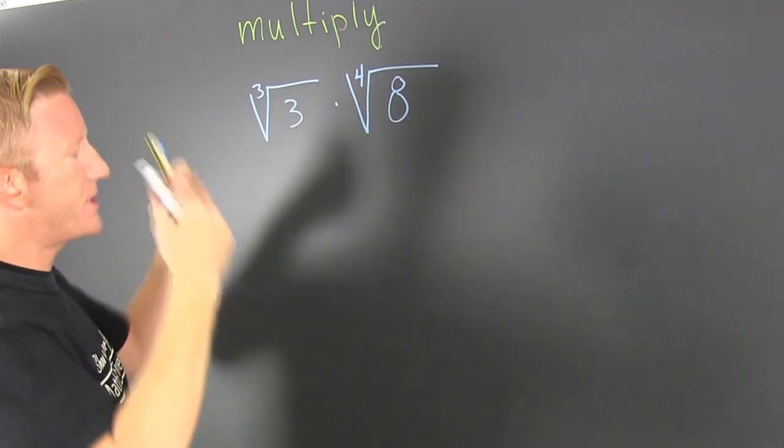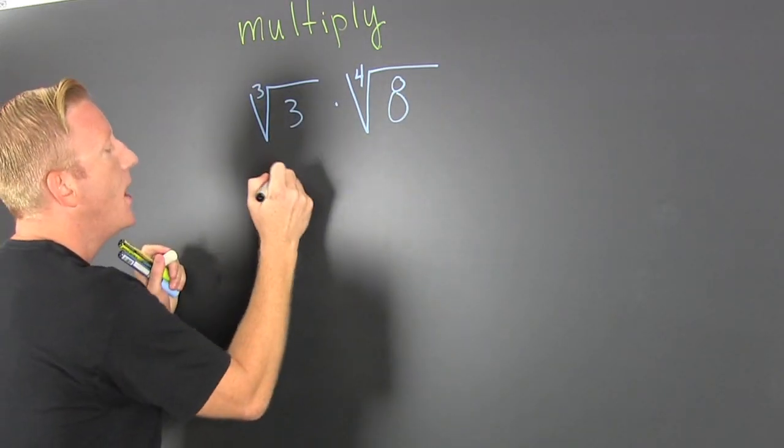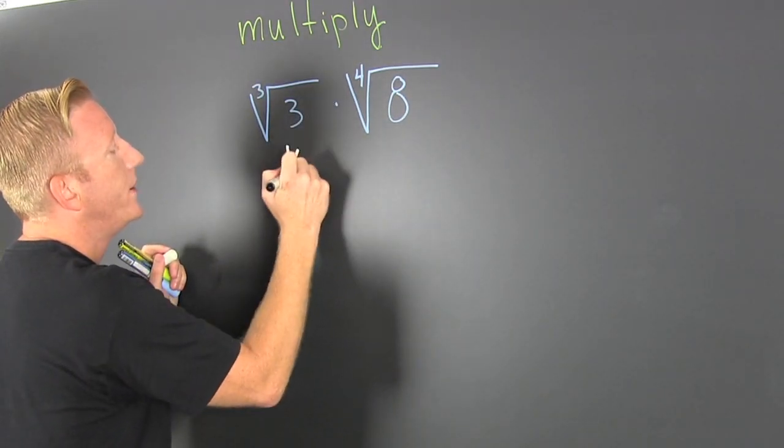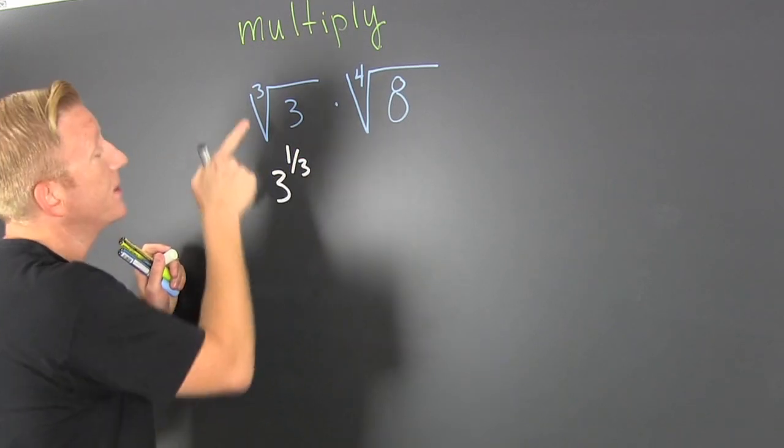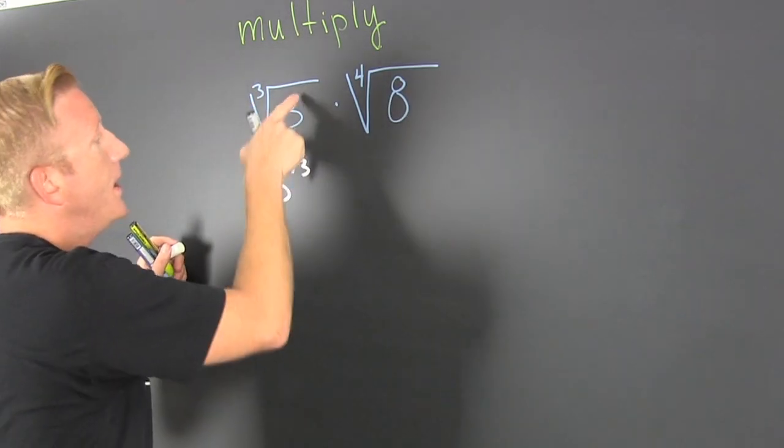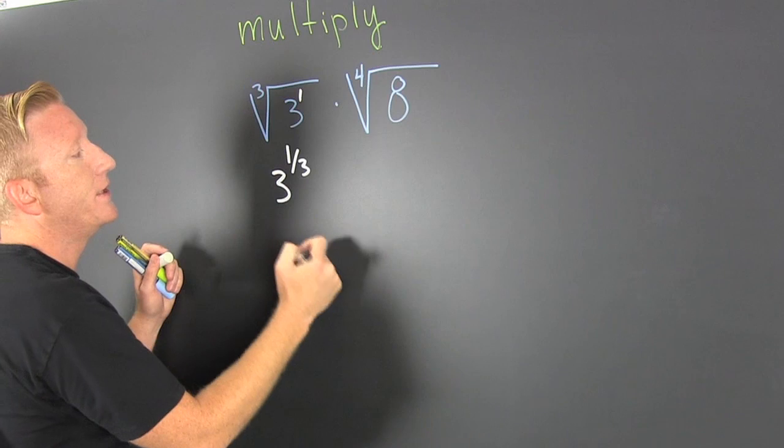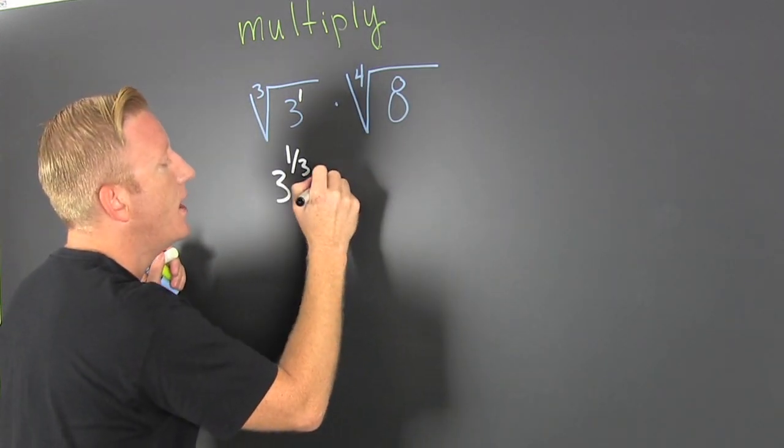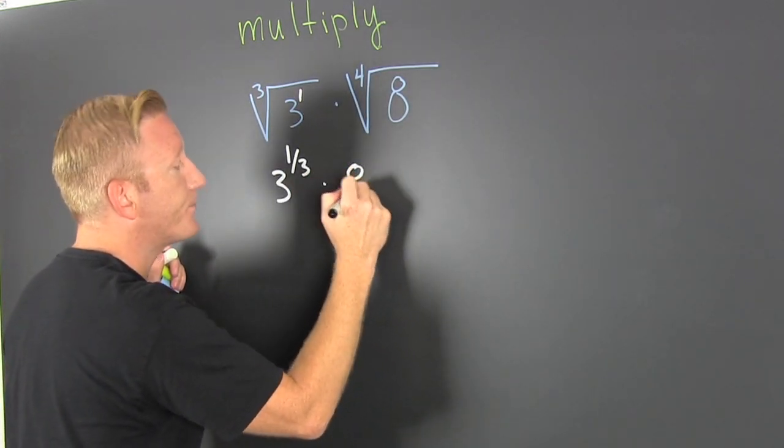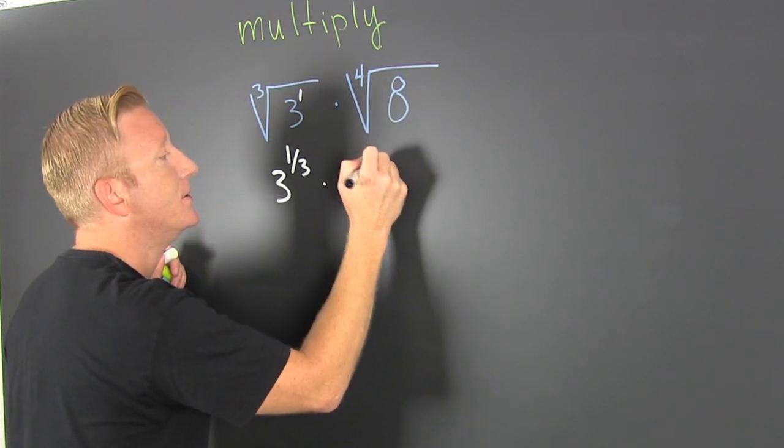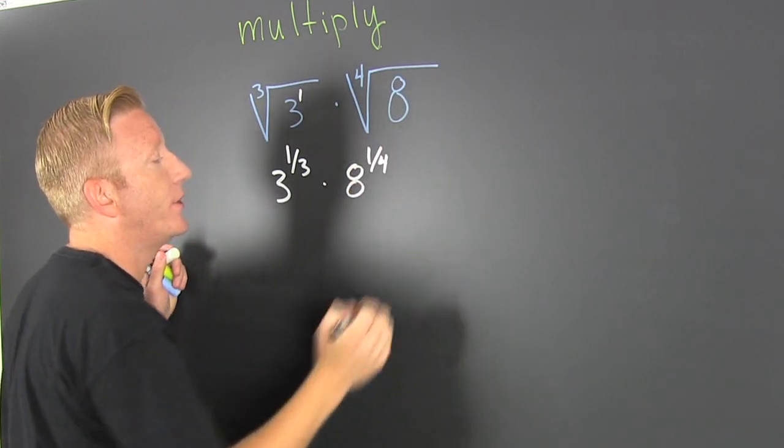Let's go to rational exponents. I'm going to call that 3 to the one-third, because the index is the denominator and the power is the numerator. I'm going to do the same thing over here: multiply by 8 to the one-fourth.